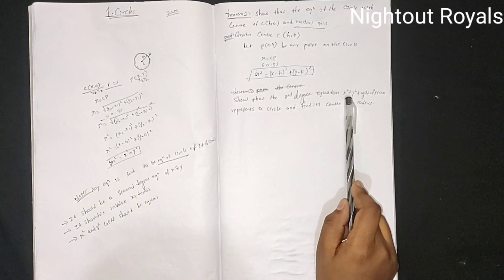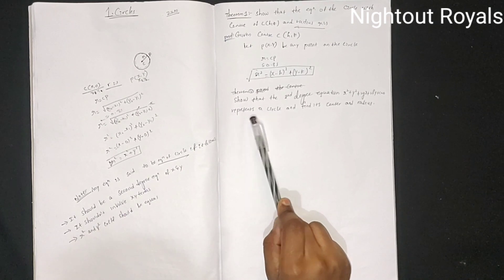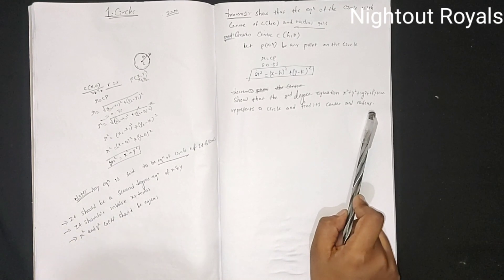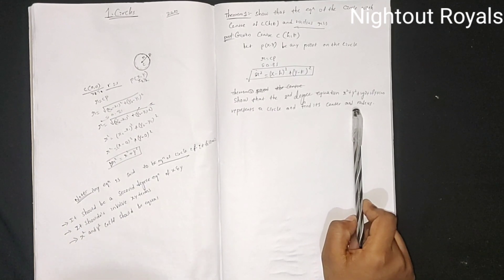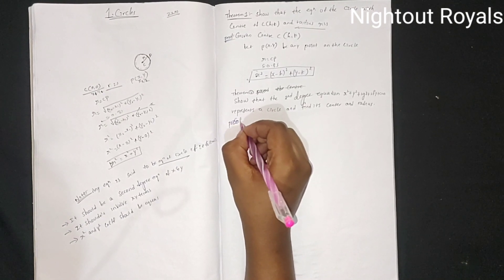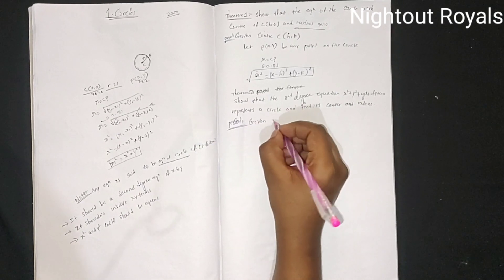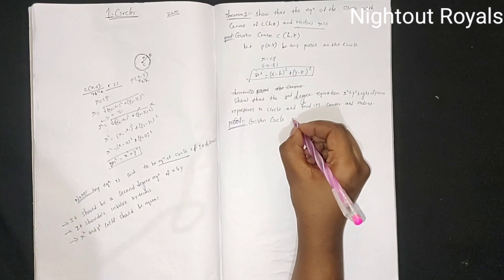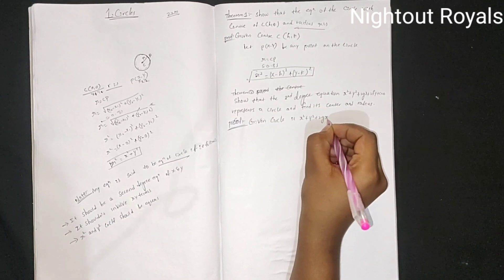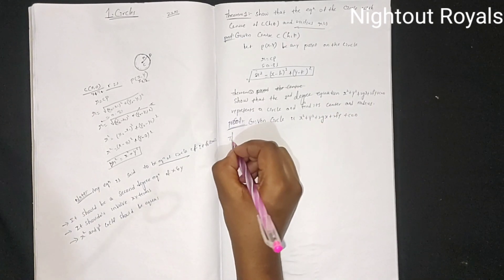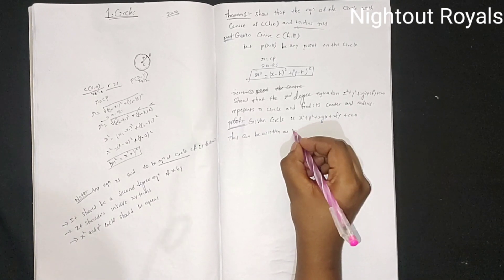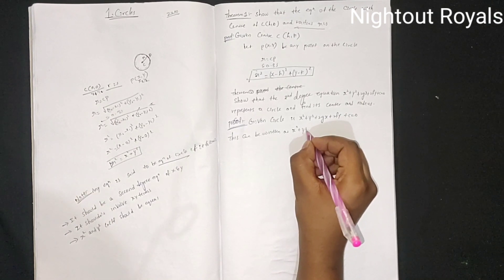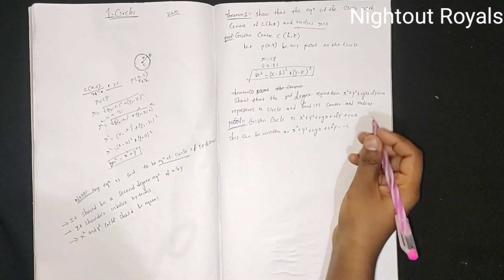Theorem 2: Show that the second degree equation x² + y² + 2gx + 2fy + c = 0 represents a circle, and find its center and radius. Given the equation x² + y² + 2gx + 2fy + c = 0, this can be rewritten by moving c to the right side: x² + y² + 2gx + 2fy = -c.